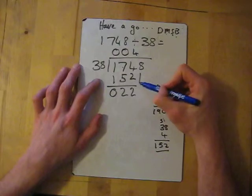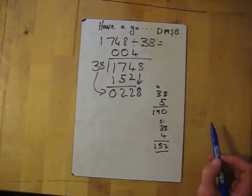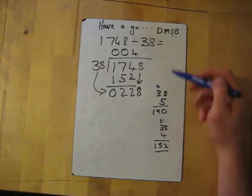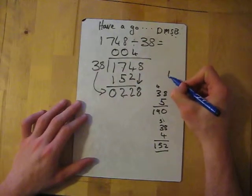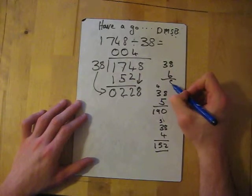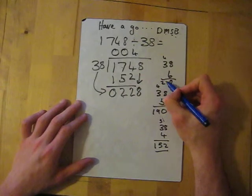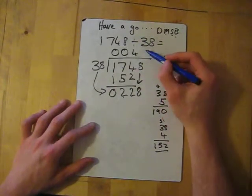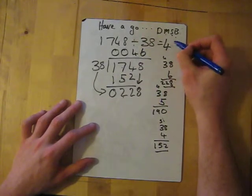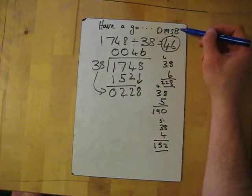Then we subtract, and now we bring down - bring down the 8. So now it's 38 into 228. 5 times was 190, so 6 times I'm thinking will probably be the answer, but I'm just going to check. 6 times 38 - 6 times 8 is 48, 6 times 3 gives me 18, add the 4 gives me 228. So it is 6 times, so I put my 6. My answer is 46. So there you go - Does McDonald's Sell Burgers.